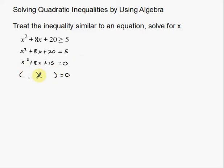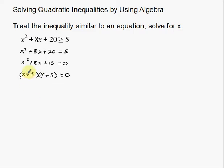Let's see if I can factor x squared plus 8x plus 15. I need two numbers that multiply to 15 and add to 8. That's 3 and 5 — 3 times 5 is 15, and 3 plus 5 is 8. So it factors as (x+3)(x+5). Setting each factor equal to 0: x plus 3 equals 0 gives x equals negative 3, and x plus 5 equals 0 gives x equals negative 5.